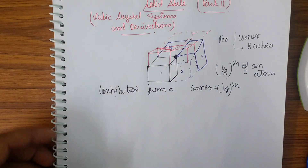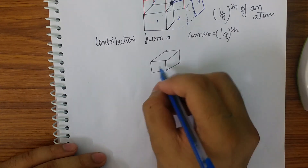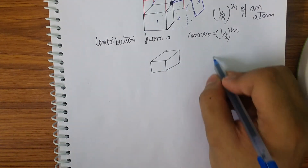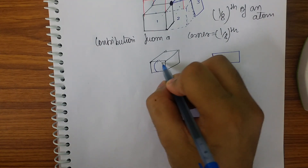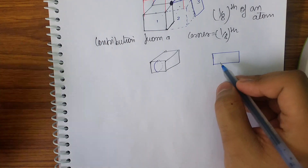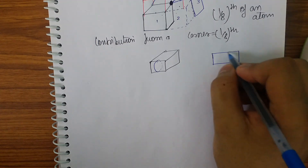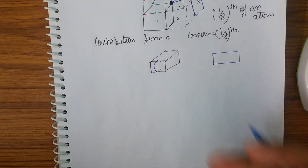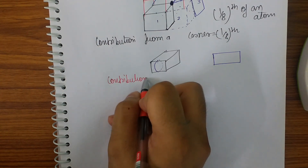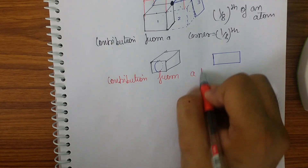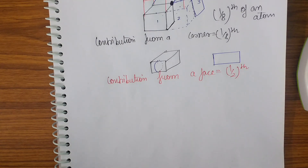Now let me derive the contribution from a face. If this is a cube, let me take any of the faces — so this is the face. Now the atom will be covering it from this side and from the other side. So how much atom will be covering it? 1/2 — one half will be on this side and the other half will be on the other side. The face divides it into two parts. So the contribution from a face center will be 1/2 of an atom.